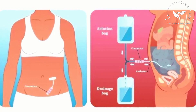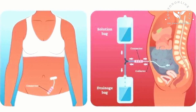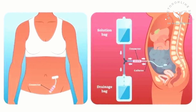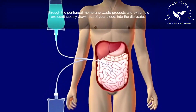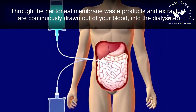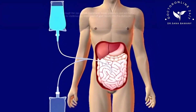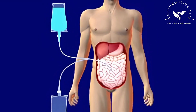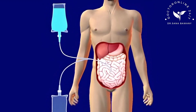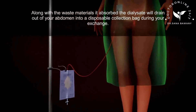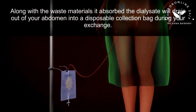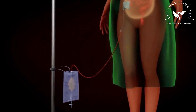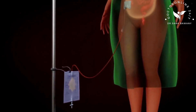First, you will use your catheter to fill your abdomen with dialysate for a period of time determined by your doctor. Through the peritoneal membrane, waste products and extra fluid are continuously drawn out of your blood into the dialysate. Along with the waste materials it absorbed, the dialysate will drain out of your abdomen into a disposable collection bag during your exchange.